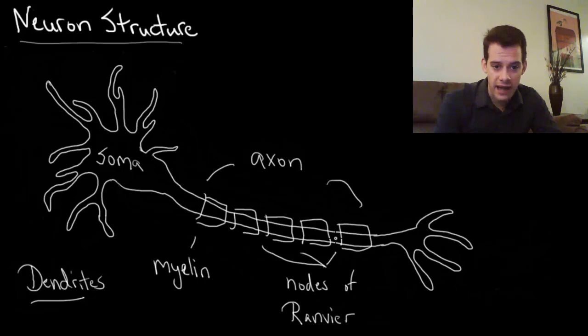So this means that neurons that are myelinated, they have myelin around their axons, are going to be able to send messages more quickly than neurons that are not myelinated. So what happens when the message gets to the end of the neuron here?